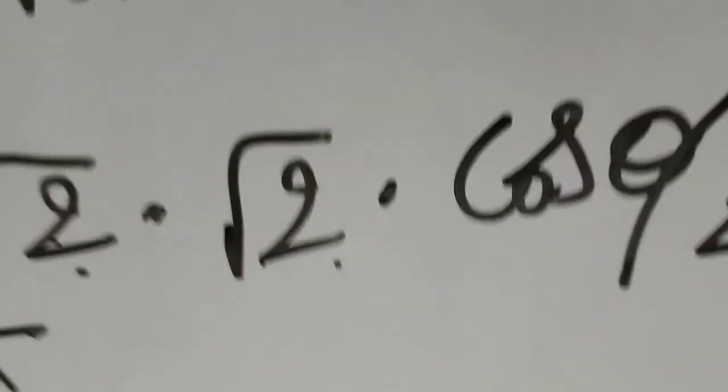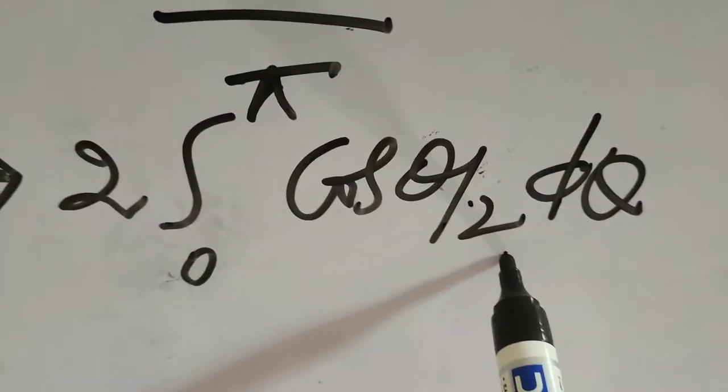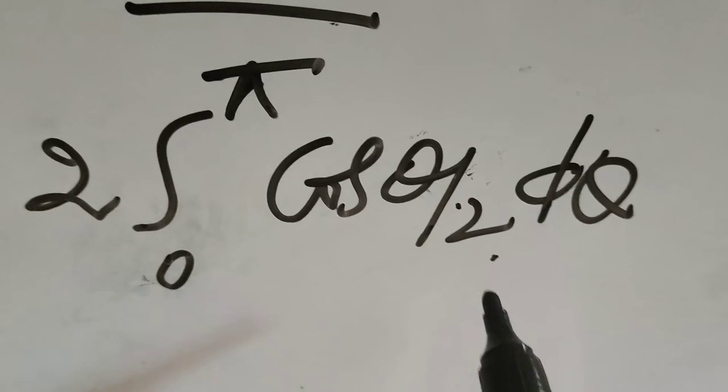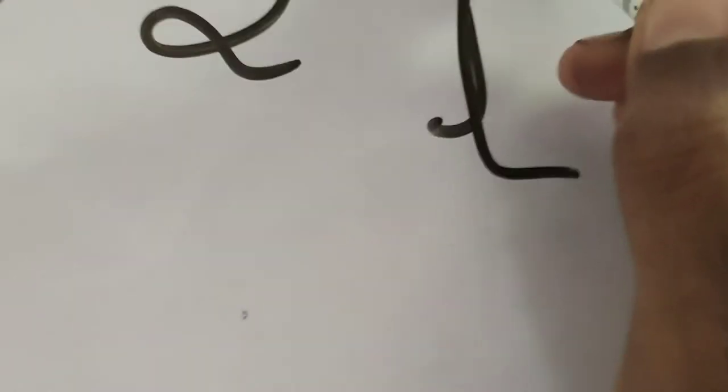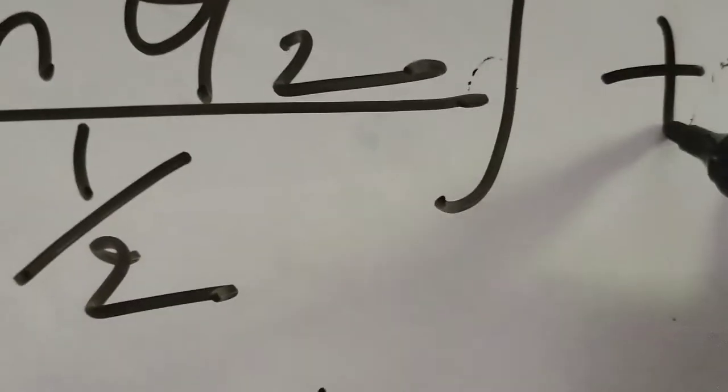That implies: 2 into integral from 0 to π of cos(θ/2) dθ. Integration of cos(θ/2) gives sin(θ/2), and since θ/2 means we divide by 1/2, that gives sin(θ/2) divided by (1/2), evaluated from 0 to π.